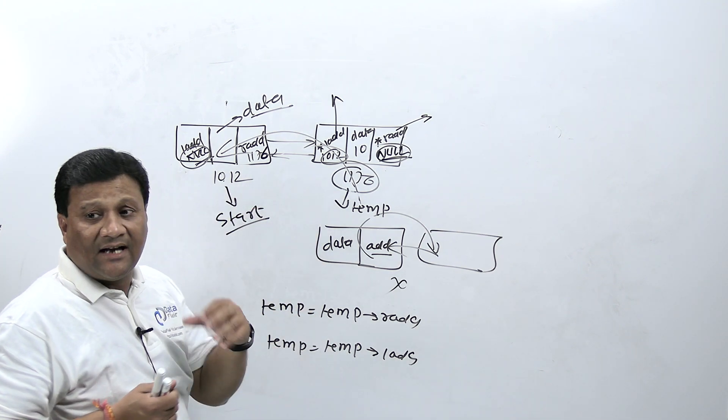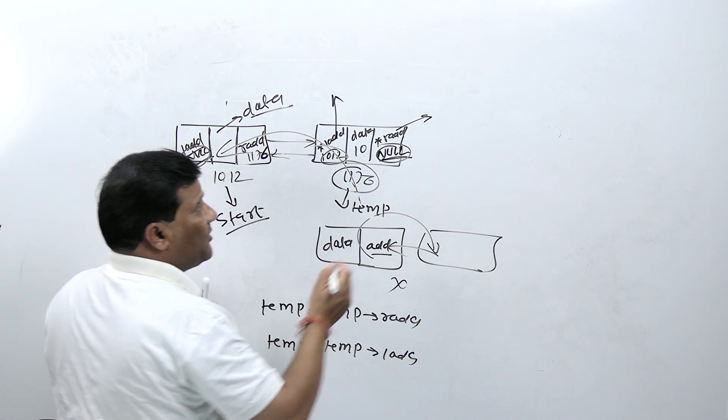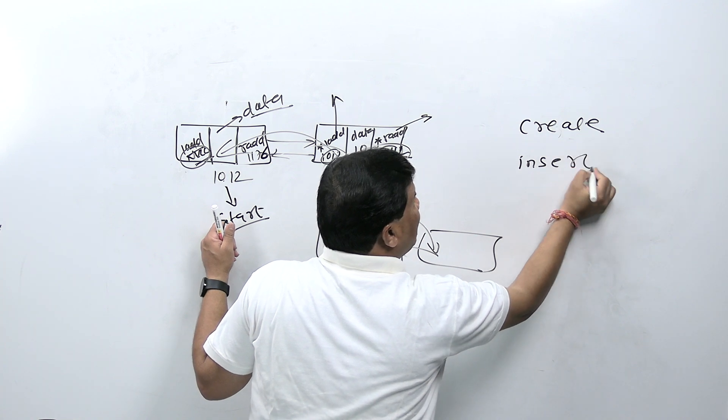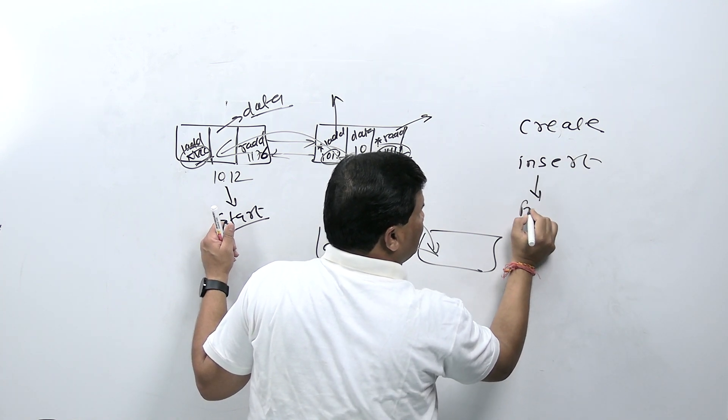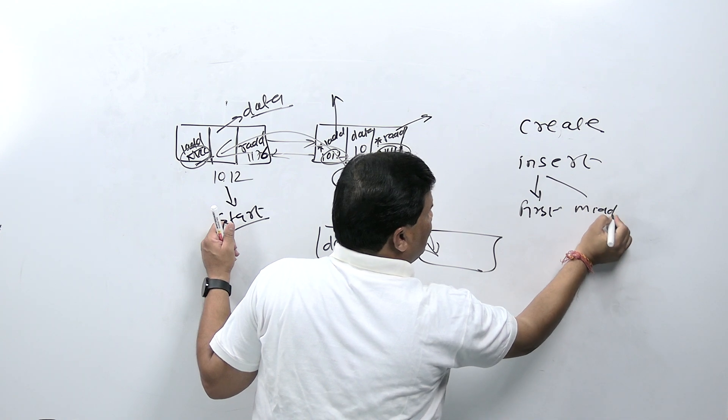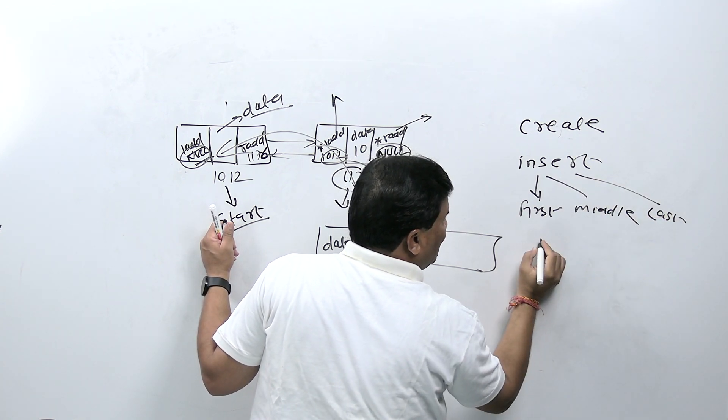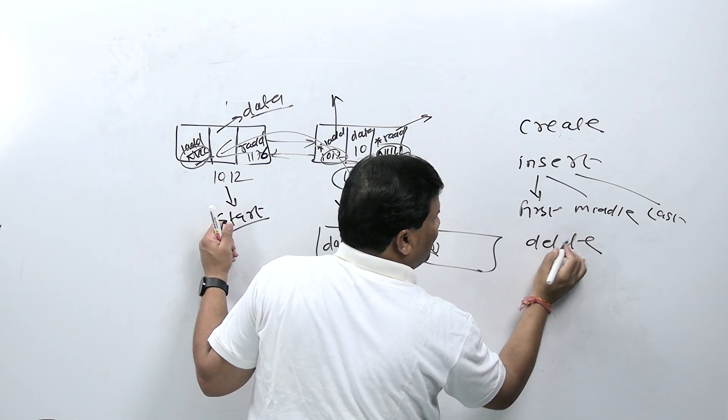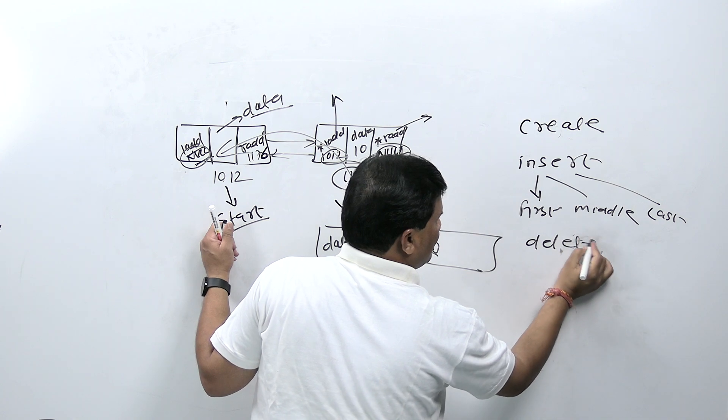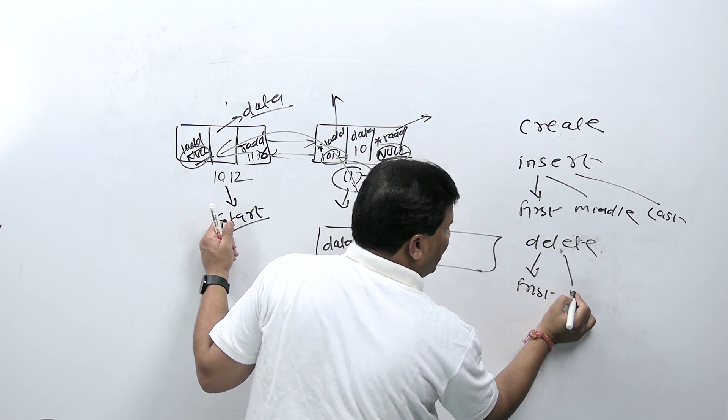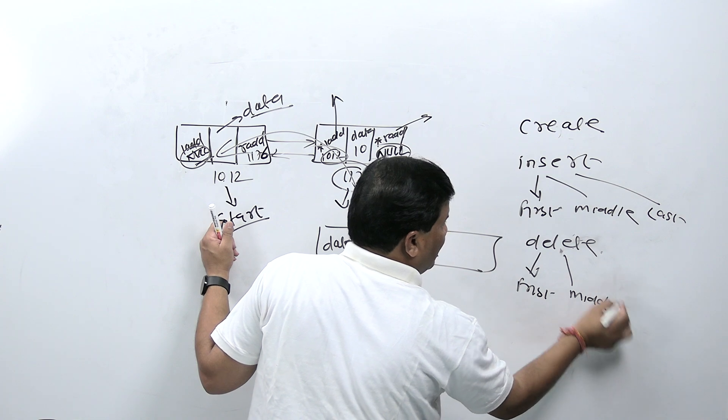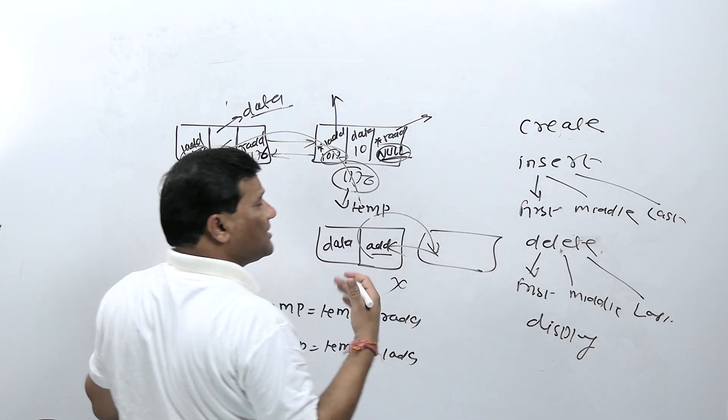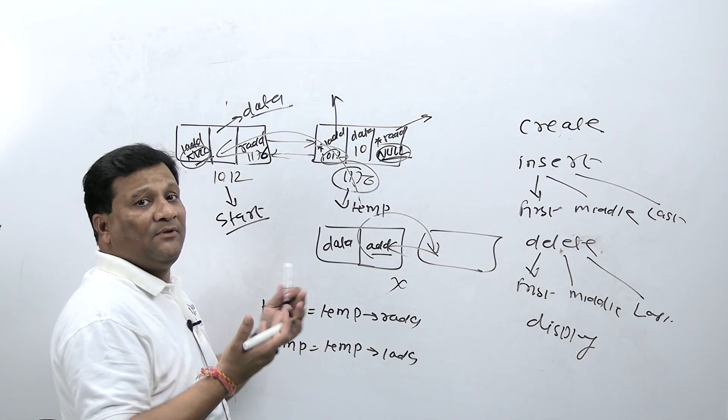All operations we performed on single linked list we'll perform here. Which operations? Create, then we'll talk about insert: insert first, insert middle, insert last. Then delete: delete first, delete first position node, delete middle position node, delete last position node, and then display. These are basic operations.